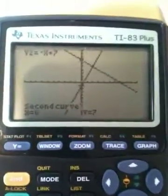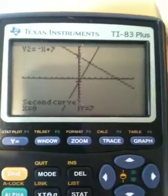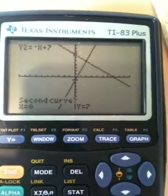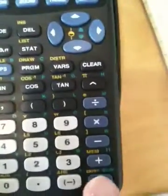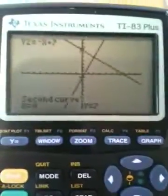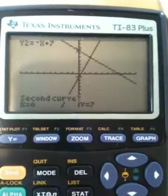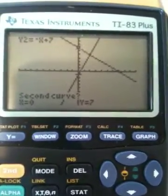Then it asks you, is the second curve y2 or y equals negative x plus 7? The answer is yes. So we're going to hit enter one more time. By the way, you'll notice the y-intercept is indicated on the bottom there at 0 comma 7. So we're going to hit enter to say yes to that next question.